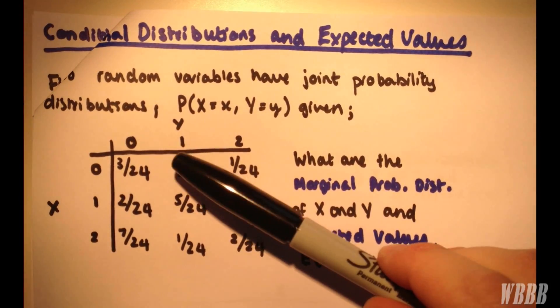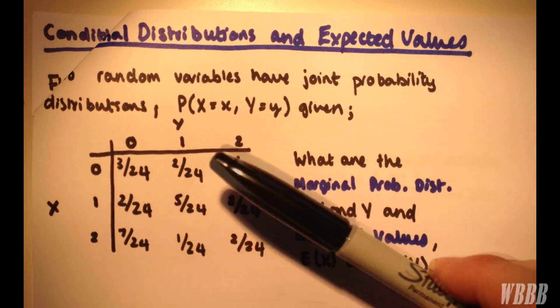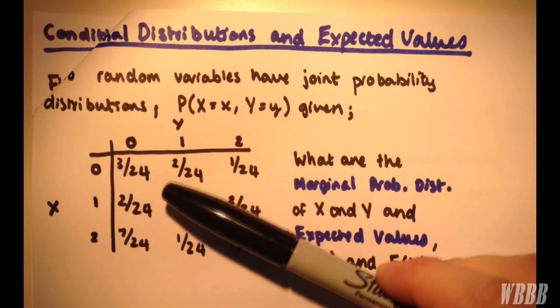So we're actually going to have 2 over 8, 5 over 8, and 1 over 8, because it's three times as likely.